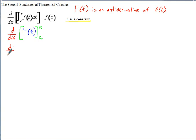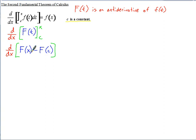Starting with the derivative on the outside: we substitute x for t, giving capital F(x), and then minus, substituting c for t, giving capital F(c). Now we take the derivative of that. The derivative of capital F(x) — well, if capital F(t) is an anti-derivative of lowercase f(t), that means taking the derivative of capital F gives you back lowercase f, it just happens to be x instead of t.